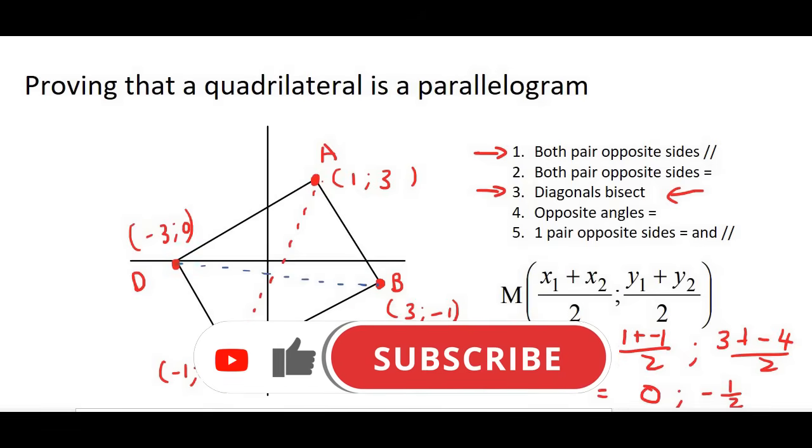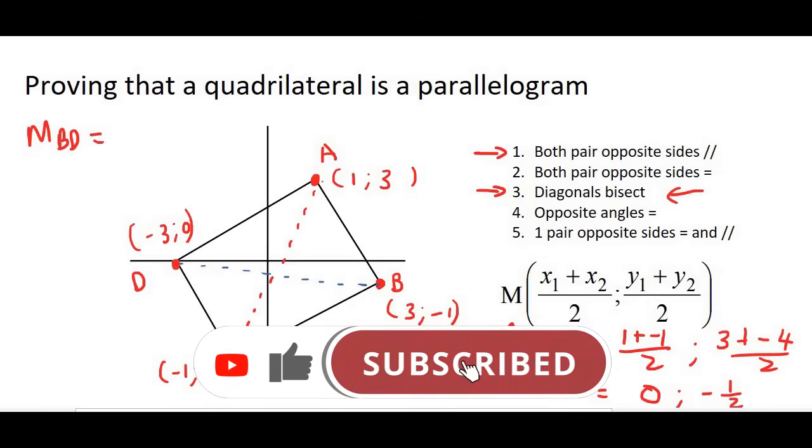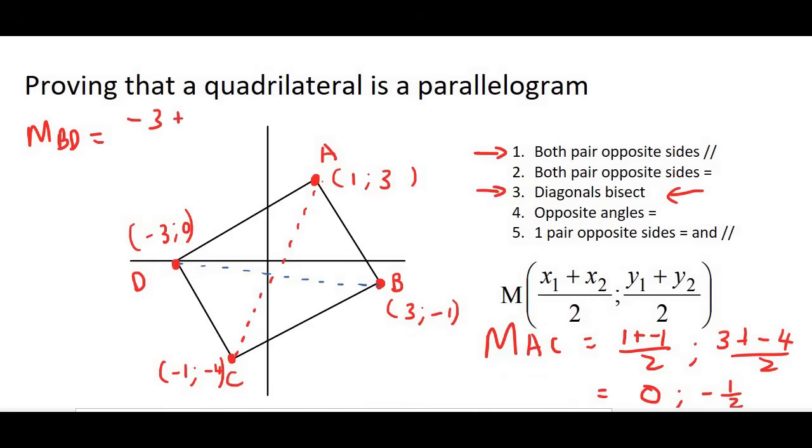What I then do is I work out the midpoint of the other diagonal, which is the line BD, which is over there. And using the same formula, it's going to be minus three plus three over two and zero minus one over two. And that's going to give us zero and negative a half.